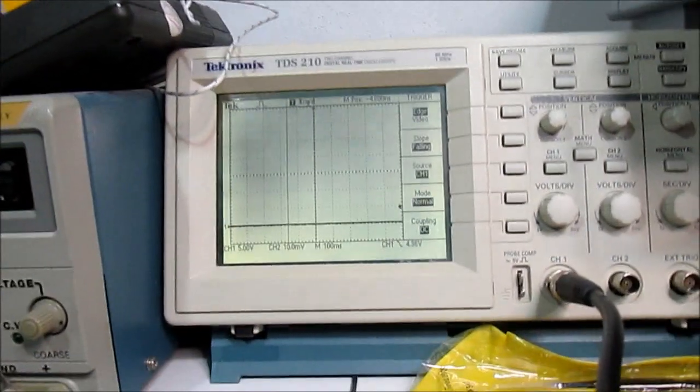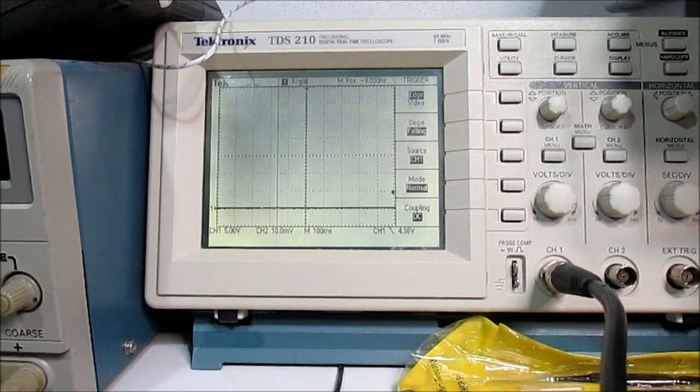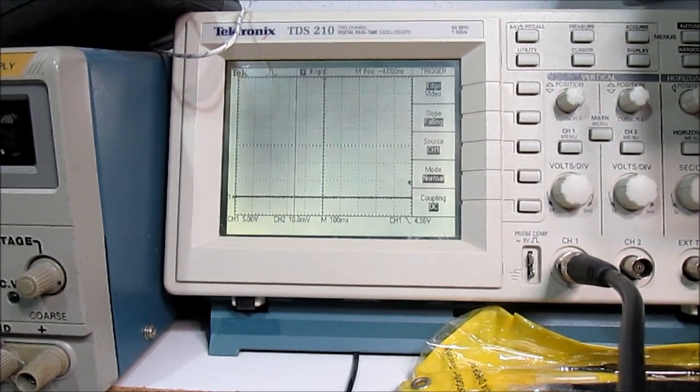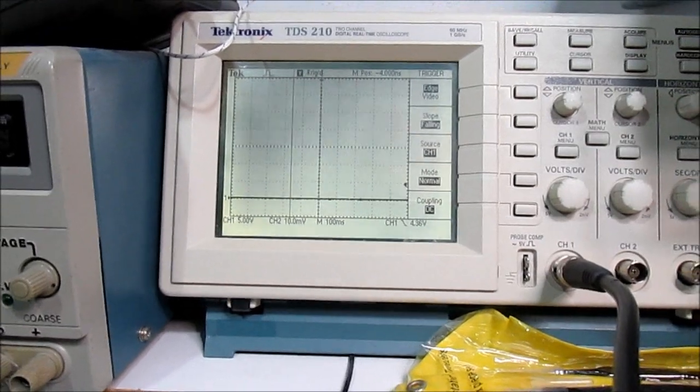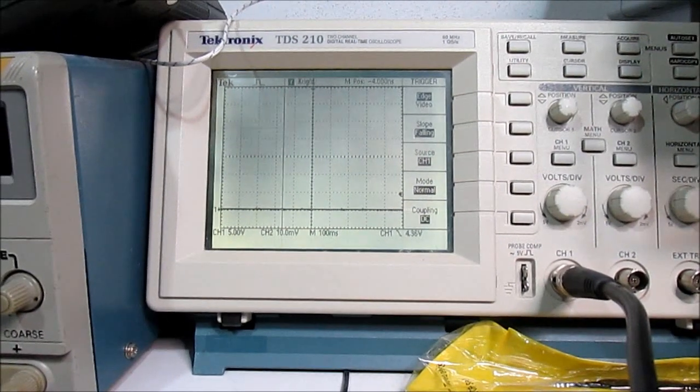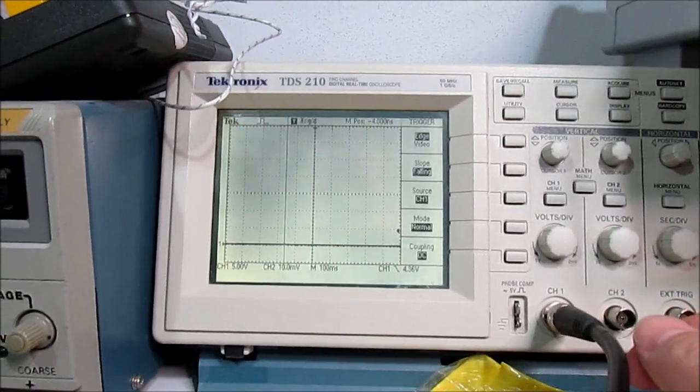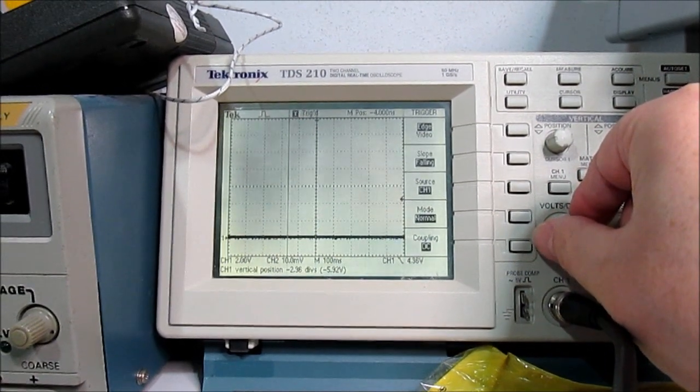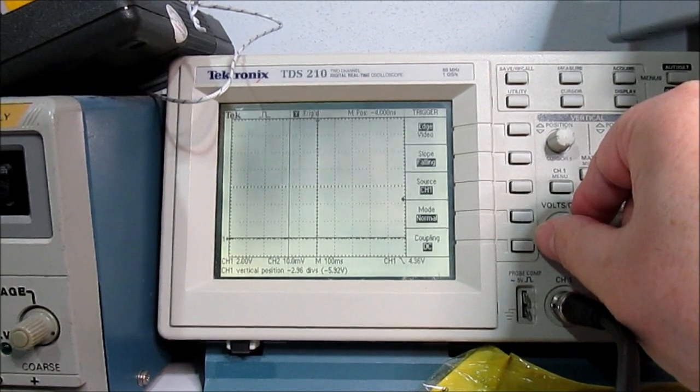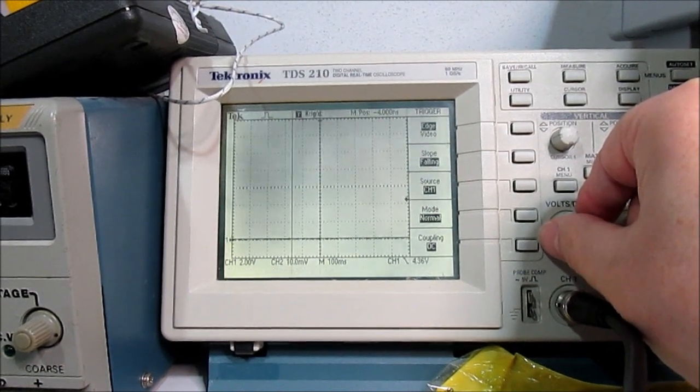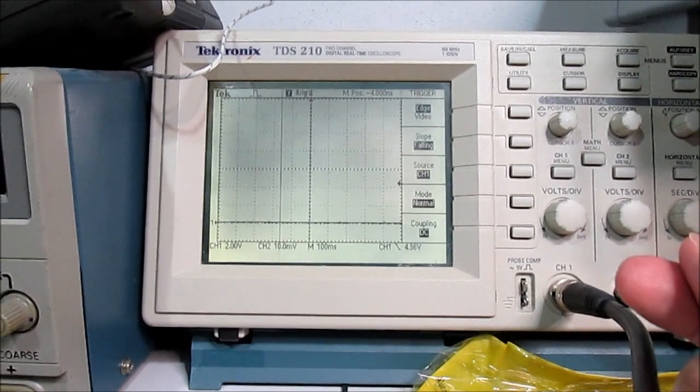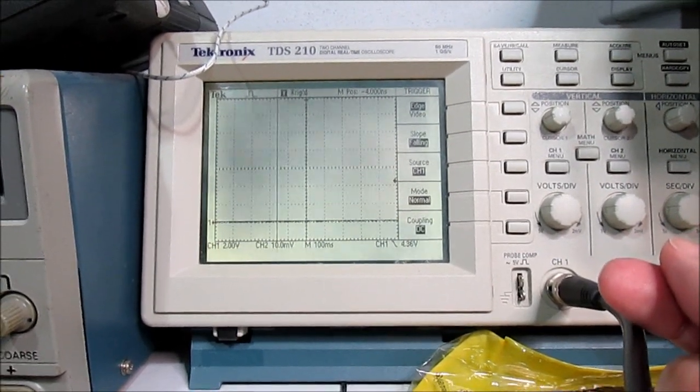Okay. I think we want to change the trigger setting to normal, so if this is one pulse per second. Okay, okay, so the scope is triggering, I see it trigger, but we're not showing anything here. Why is that?